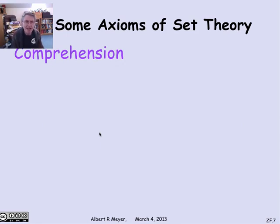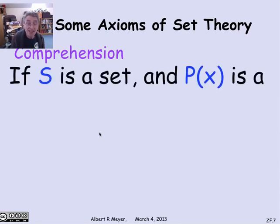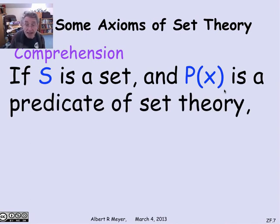When you're trying to deal with Russell's paradox kind of issue, where you define a collection of sets that satisfy some property, the safe conservative version is the comprehension axiom. It says that if s is a set and p of x is an arbitrary predicate of set theory, which might in fact be one of these dangerous things like x is not a member of x.